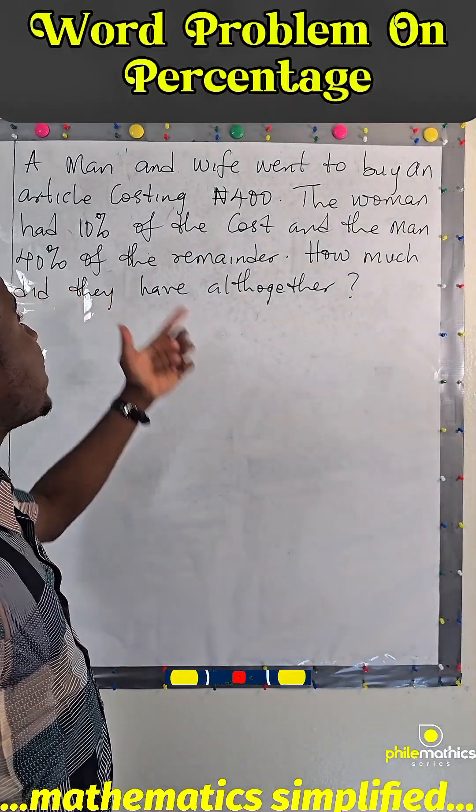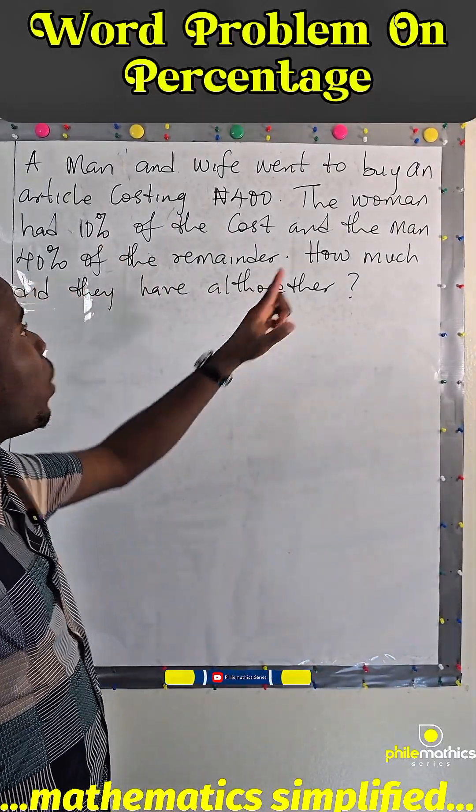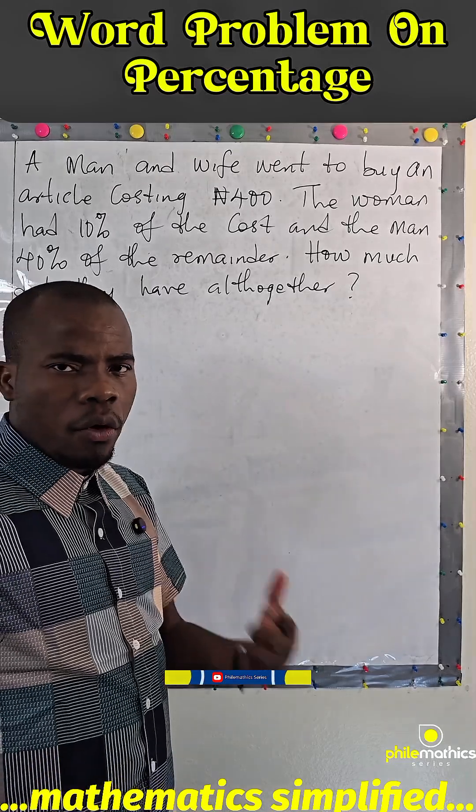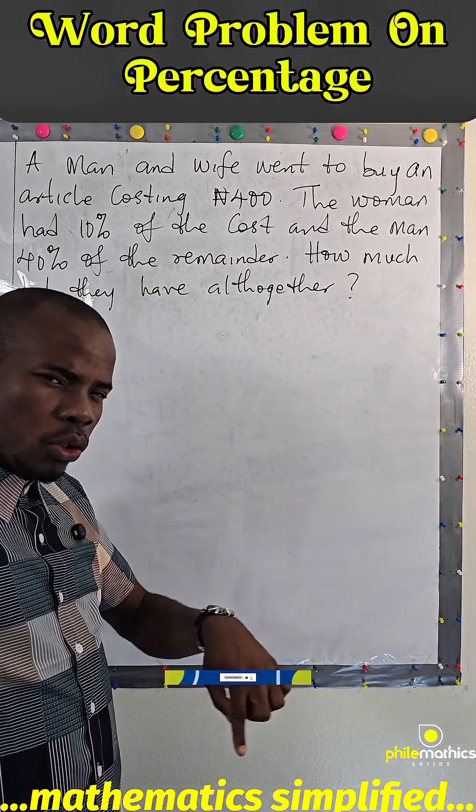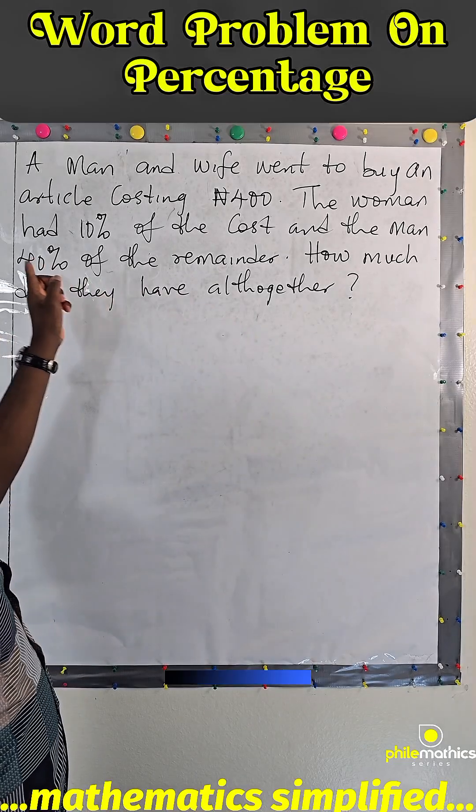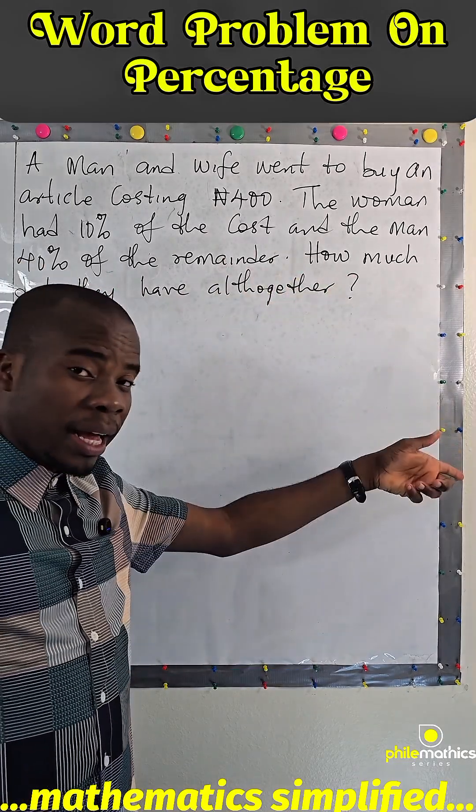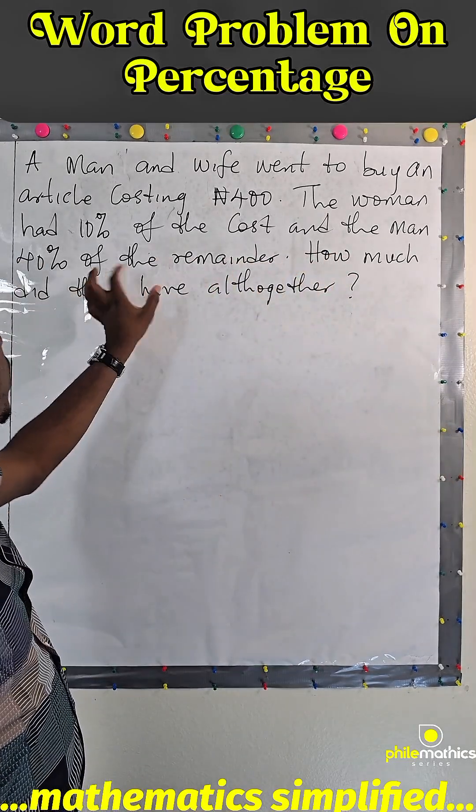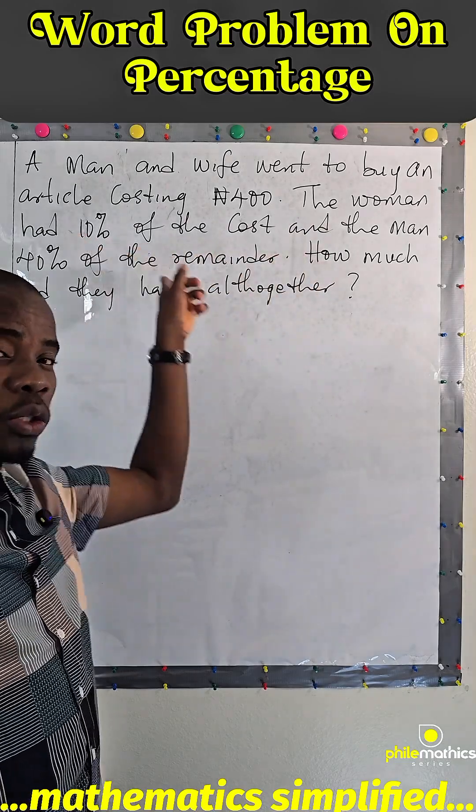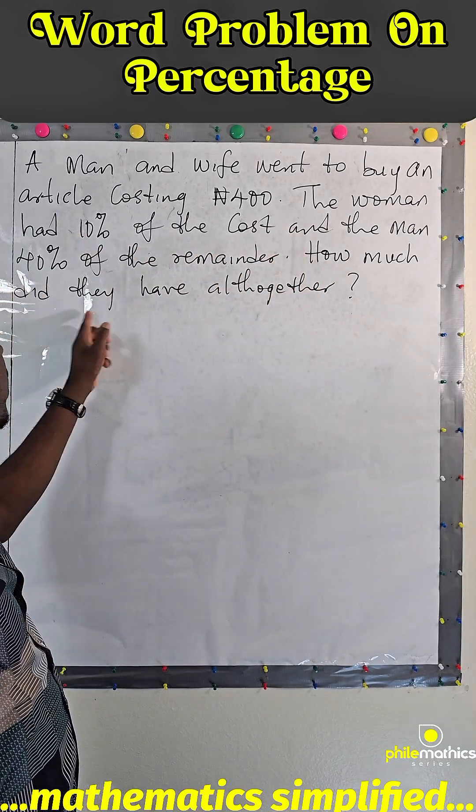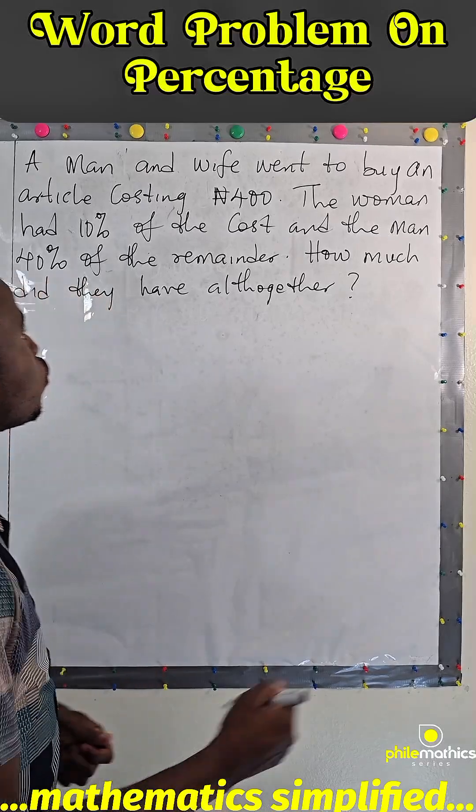In this problem, we are told that a man and his wife went to buy an article costing ₦400. The woman had 10% of the cost and the man 40% of the remainder. This is where the key is to solving this problem—not 40% of the cost. How much did they have altogether?